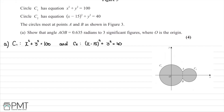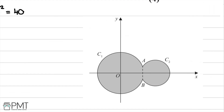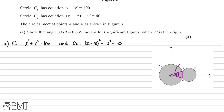Looking at our diagram in more detail, we want to find the angle AOB, which means we're going to have a triangle between A, O, and B. We want to find the angle theta. The first step is to work out the coordinates of points A and B, and we can do this by taking one of our equations and substituting it into the other.